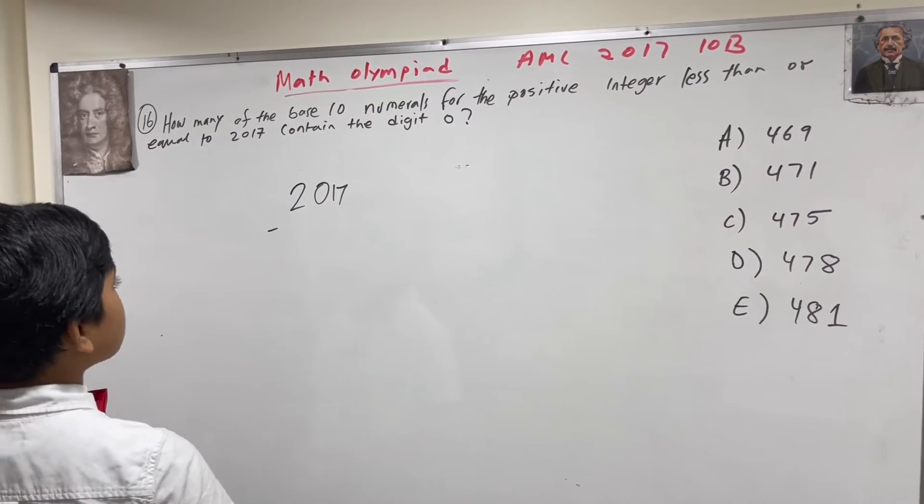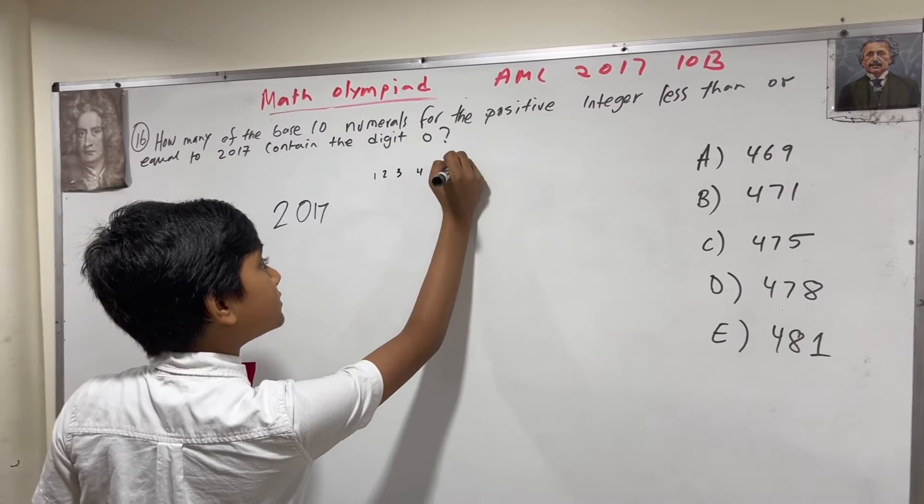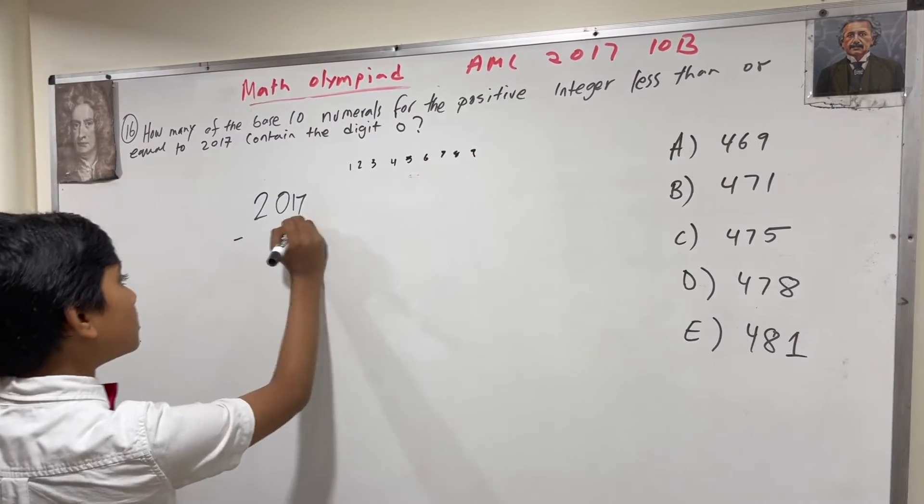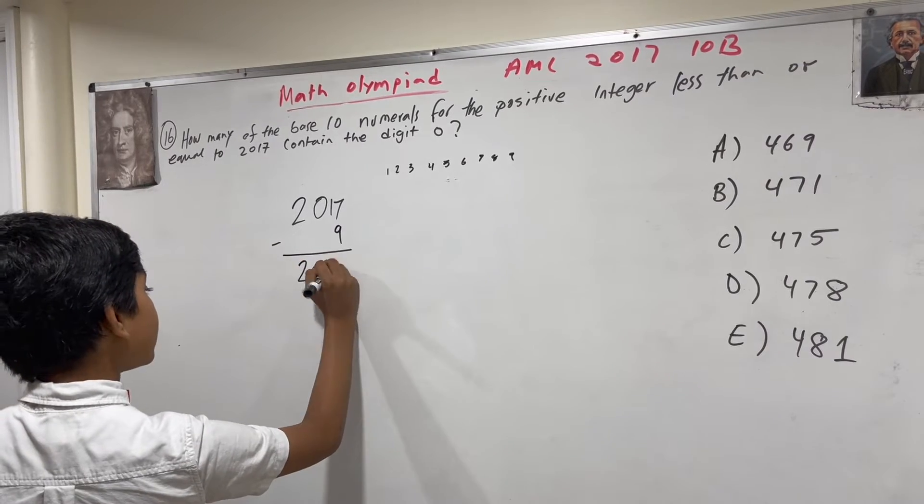Okay, so first of all, you have the one-digit numbers: 1, 2, 3, 4, 5, 6, 7, 8, and 9. So subtract 9, making it 2008.